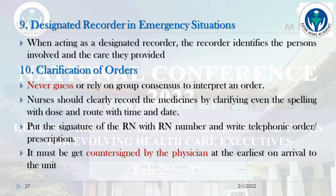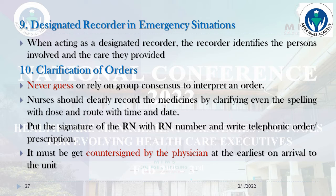Clarification of orders: never guess or rely on group consensus to interpret an order. If you are unable to read a prescription written by a doctor, do not assume — contact the prescribing doctor directly. Do not discuss with somebody else and then administer medicine or do the procedure. Nurses should clearly record medicines by clarifying even the spelling, with the dose, route, time, and date. Write and put the signature of the RN with RN number, and if it is a telephonic order, write 'telephonic order' and get it countersigned by the physician at the earliest on arrival to the unit.